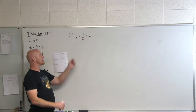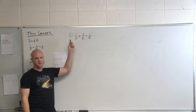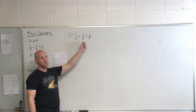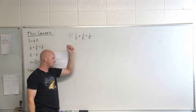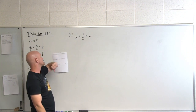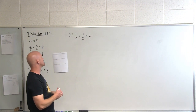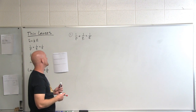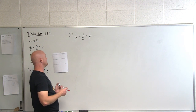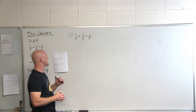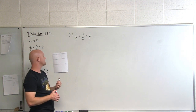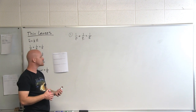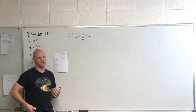Question number one. You find that the thin lens and mirror equation is kind of your go-to equation in this section. Question number one says: if an object is placed 12 centimeters in front of a concave mirror, and the focal distance is given as 4 centimeters, what will be the magnification of the image? Is it real or virtual, upright or inverted?